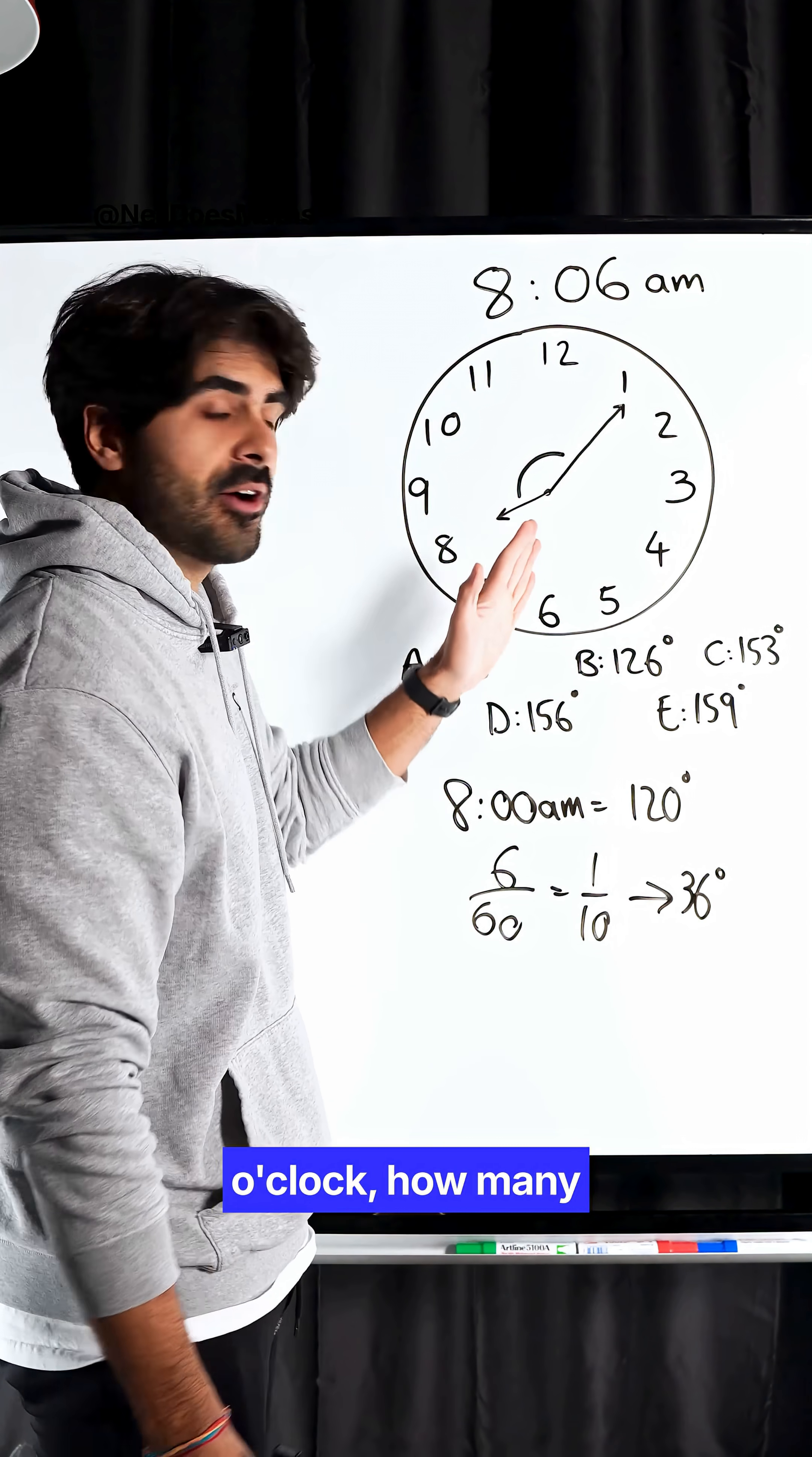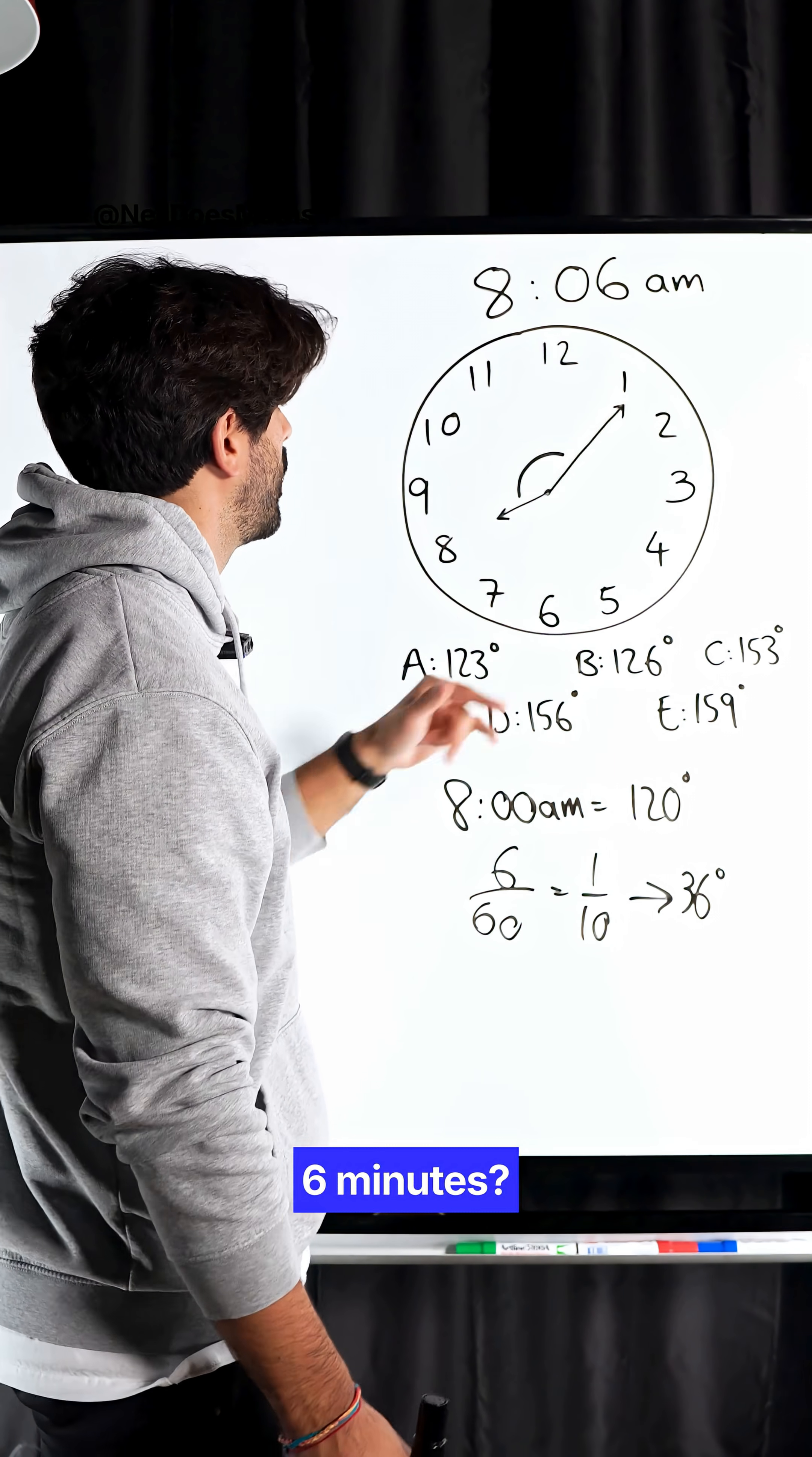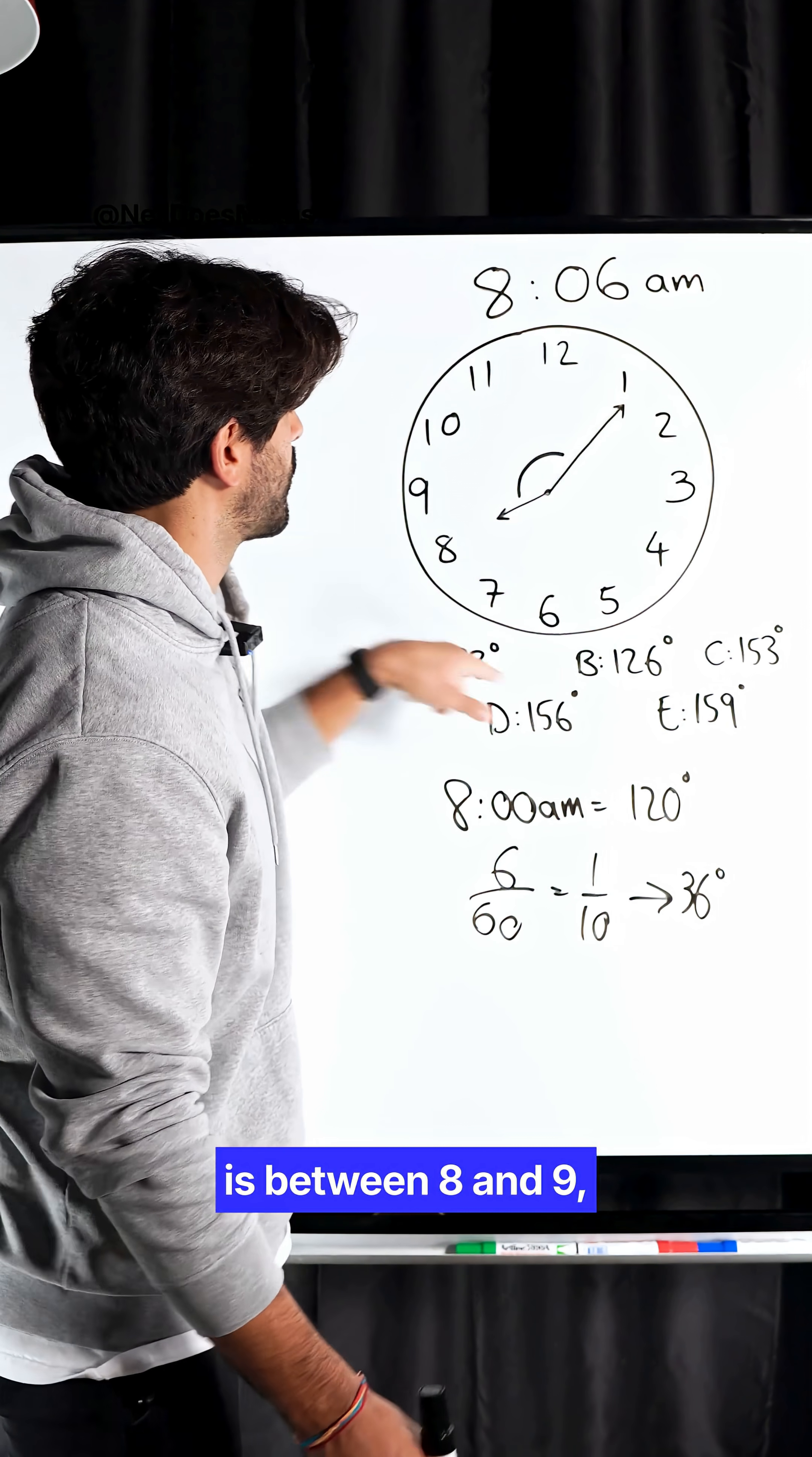Now with the 8 o'clock, how many degrees does it move when this has moved 6 minutes? Well, it also will have moved one-tenth, but the proportion is between 8 and 9, not the full circle.